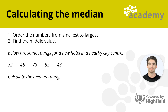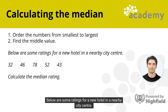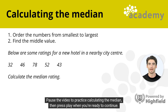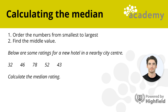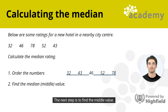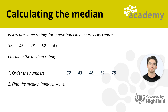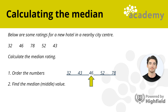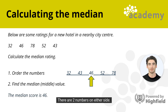Here's an example question for you to try. Below are some ratings for a new hotel in a nearby city center. Calculate the median hotel rating. When ordered from smallest to largest, the numbers are 32, 43, 46, 52 and 78. There are five values, so we find the middle number. The median is 46, with two numbers on either side.